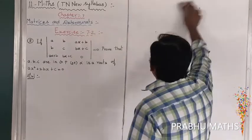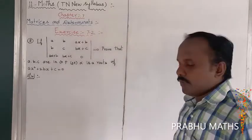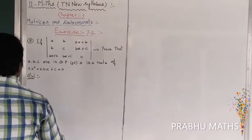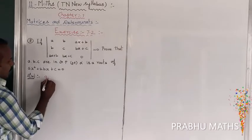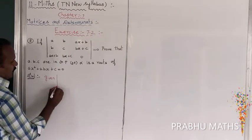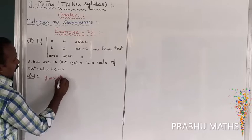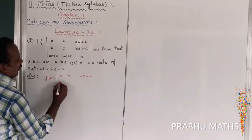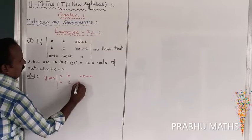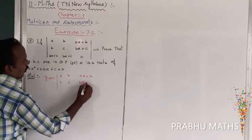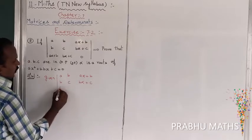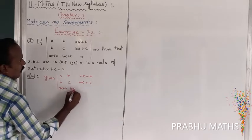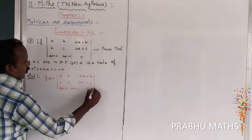This condition is followed for this sum. So first of all, the given determinant values are: first row — A, B, A·alpha plus B; second row — B, C, B·alpha plus C; third row — A·alpha plus B, B·alpha plus C, 0.